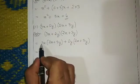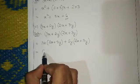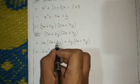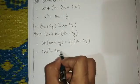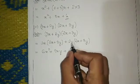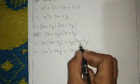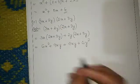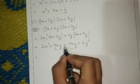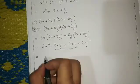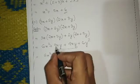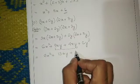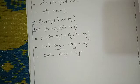Now do the simple multiplication: three into two is six, x into x is x square. Plus: three threes are nine, x into y gives xy. Plus: two twos are four, y into x gives xy. Plus: two threes are six, y into y gives y square. Now combine like terms — nine xy and four xy are like terms — so the answer is 6x square plus 13xy plus 6y square.